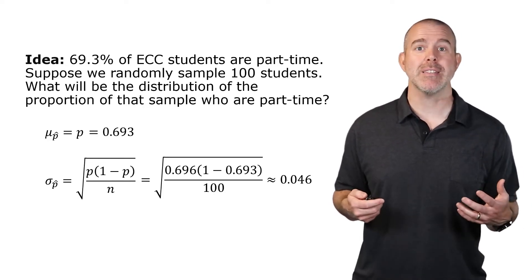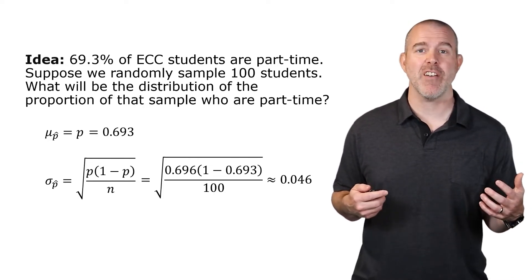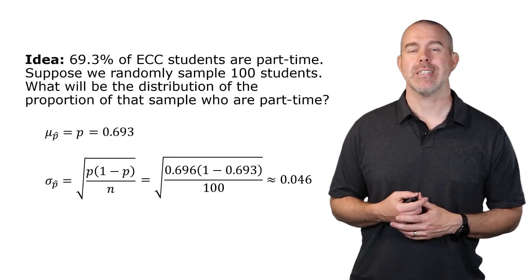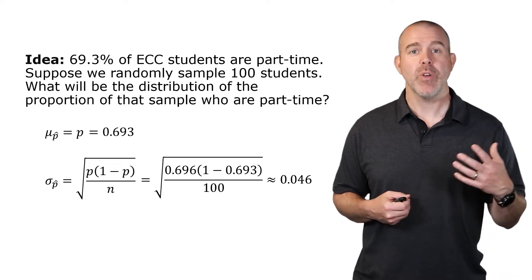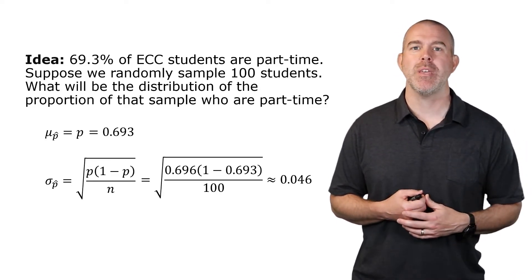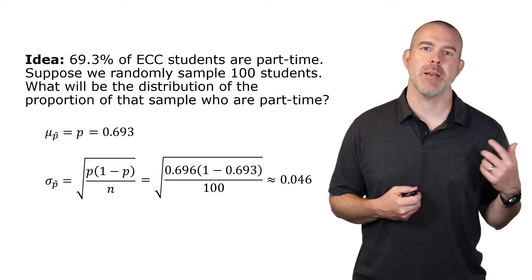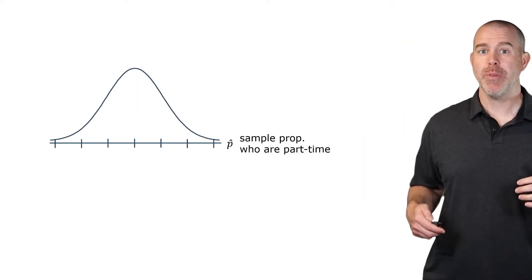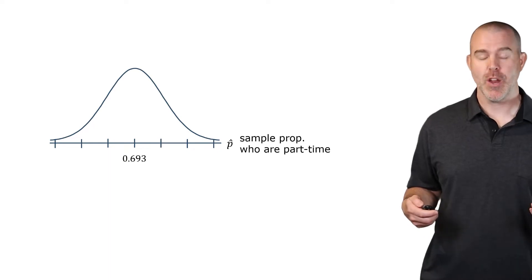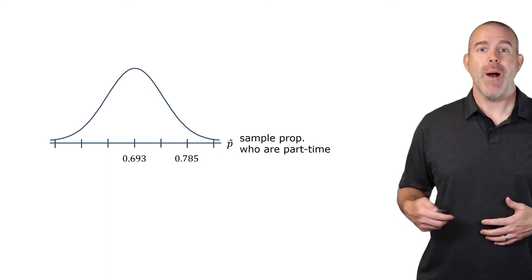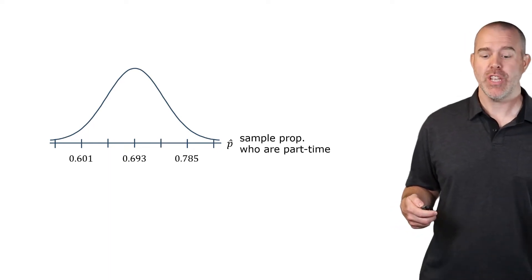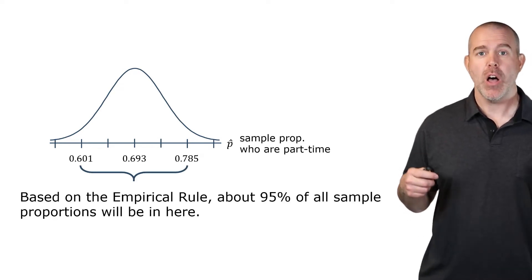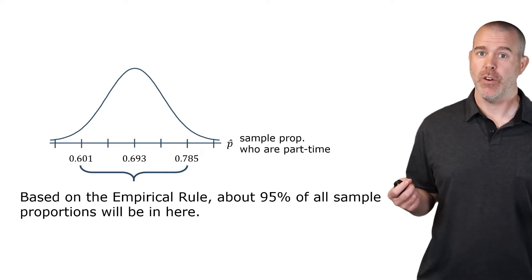We have a sample size of 100 that is less than 5% of all ECC students — there are about 10,000 students. Computing n times p times 1 minus p gives at least 10, so our distribution should be approximately normal. Going out two standard deviations each direction covers about 95% of all sample proportions.